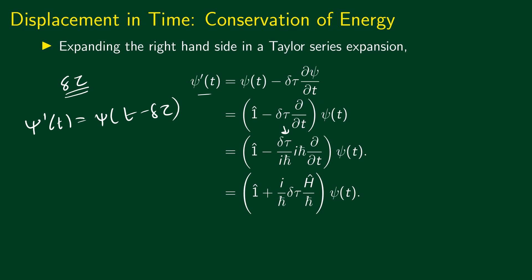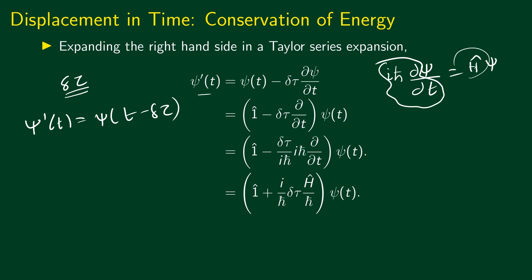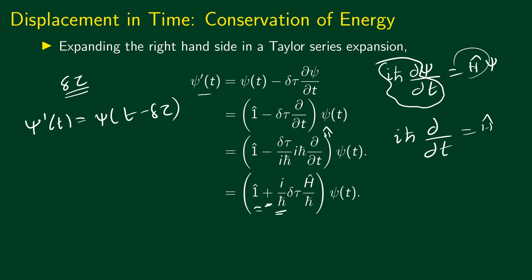The second term in the bracket can be written by multiplying and dividing by i h bar. So this can be written as delta tau divided by i h bar, times i h bar partial time derivative. Now from the Schrödinger equation, i h bar partial derivative of psi is equal to H psi. This means that i h bar partial time derivative is the Hamiltonian operator. So this becomes the identity operator plus i divided by h bar, times delta tau times H hat, acting on psi of t.